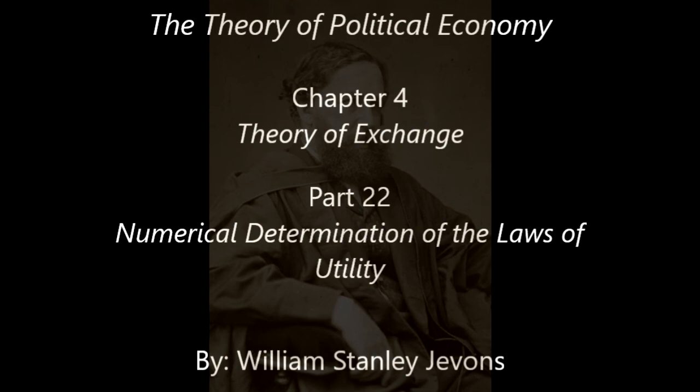When in the long course of scientific progress a sufficient supply of suitable statistics has been at length obtained, it will become a mathematical problem of no great difficulty how to disentangle the functions expressing the degrees of utility of various commodities. One of the first steps, no doubt, will be to ascertain what proportion of the expenditure of poor people goes to provide food at various prices of that food. But great difficulty is thrown in the way of all such inquiries by the vast differences in the condition of persons, and still greater difficulties are created by the complicated ways in which one commodity replaces or serves instead of another.